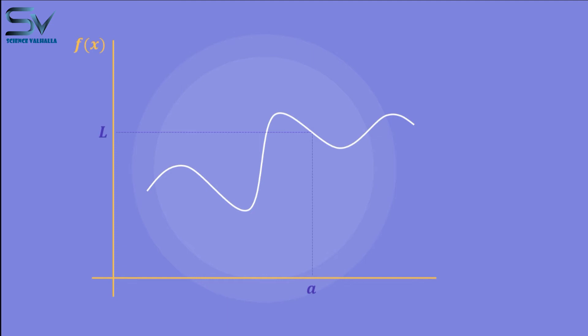In other words, for a function to be continuous at a given point, its value should be equal to the function's limit at that point. As we can see in this graph at X equals A, its value is equal to function's limit at this point. So this function is continuous at point X equals A.